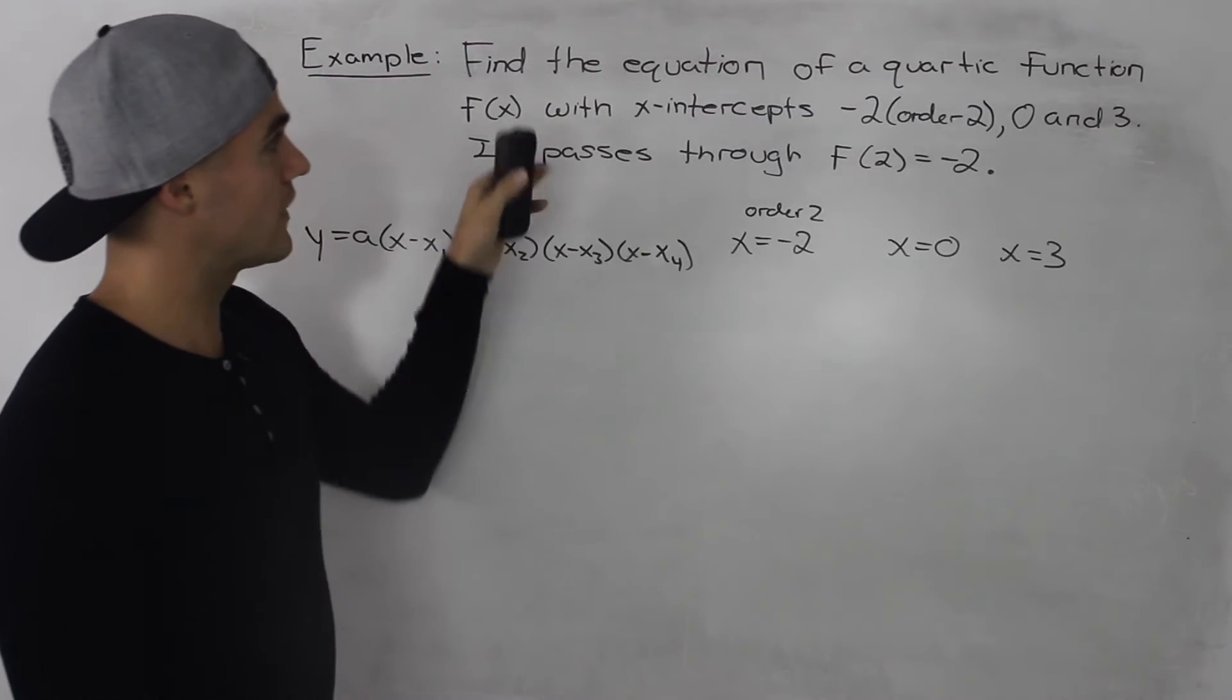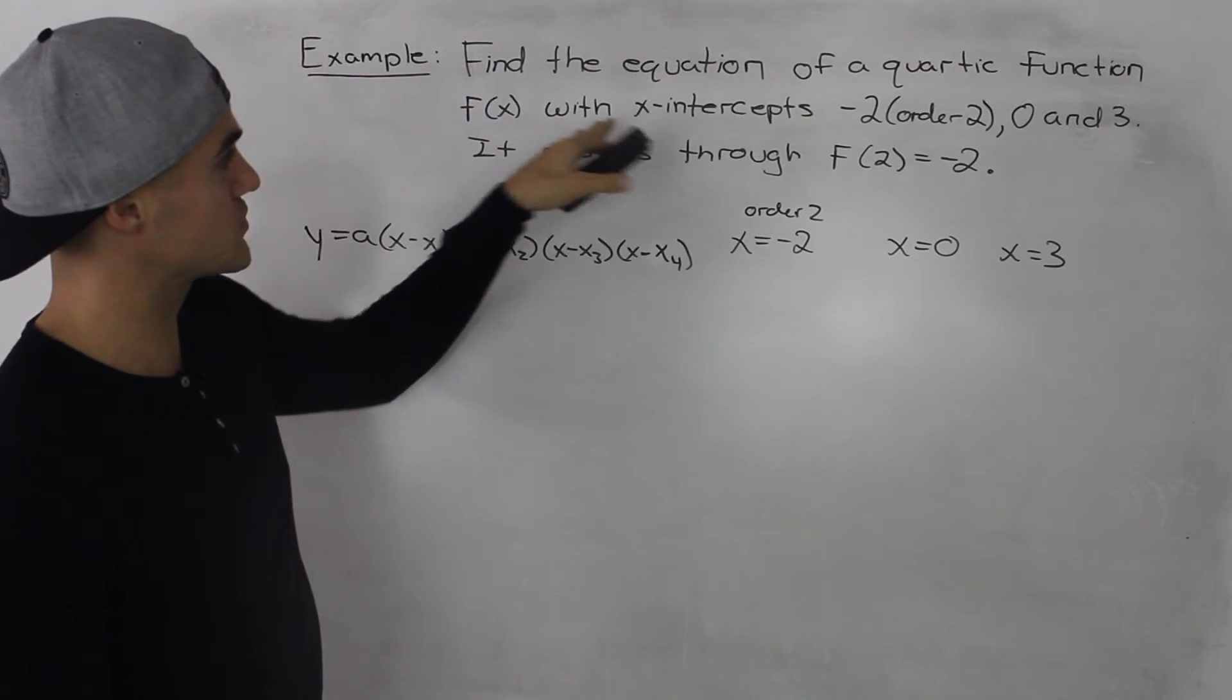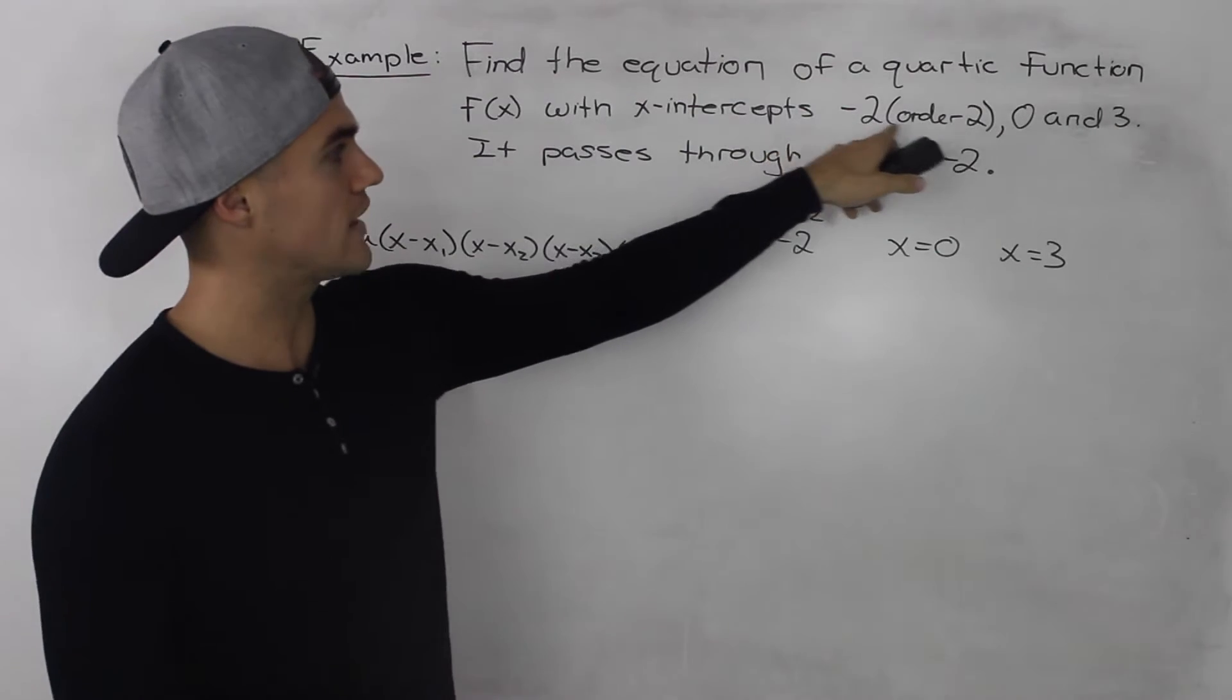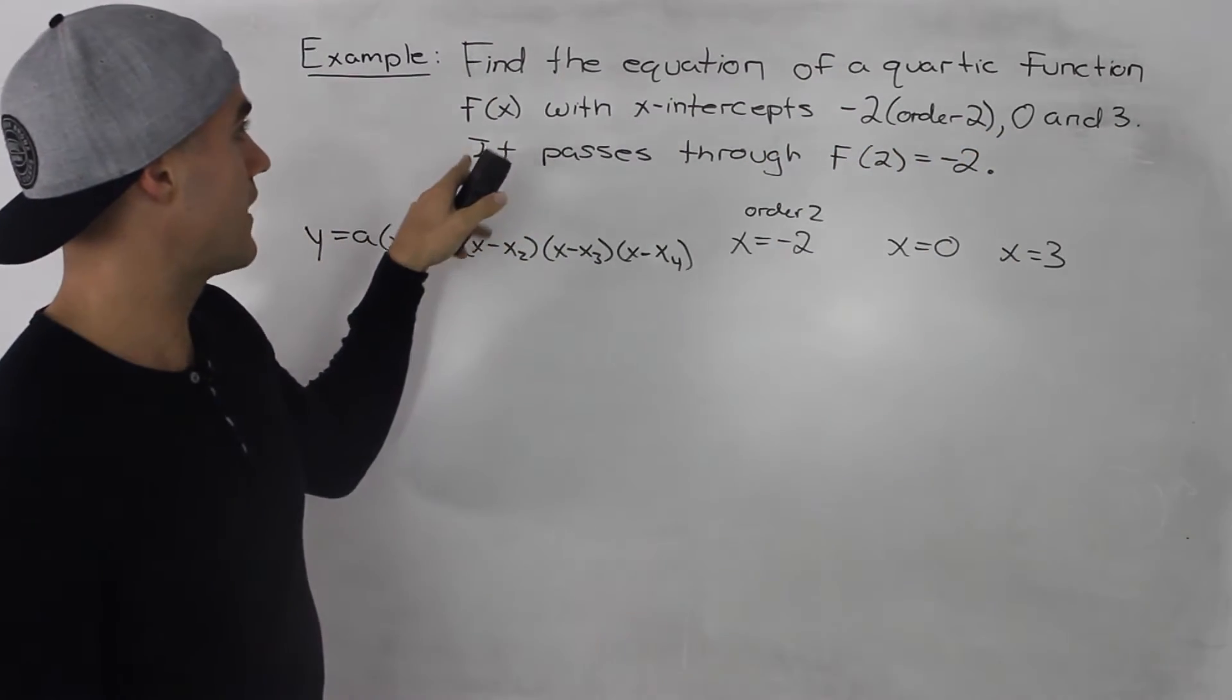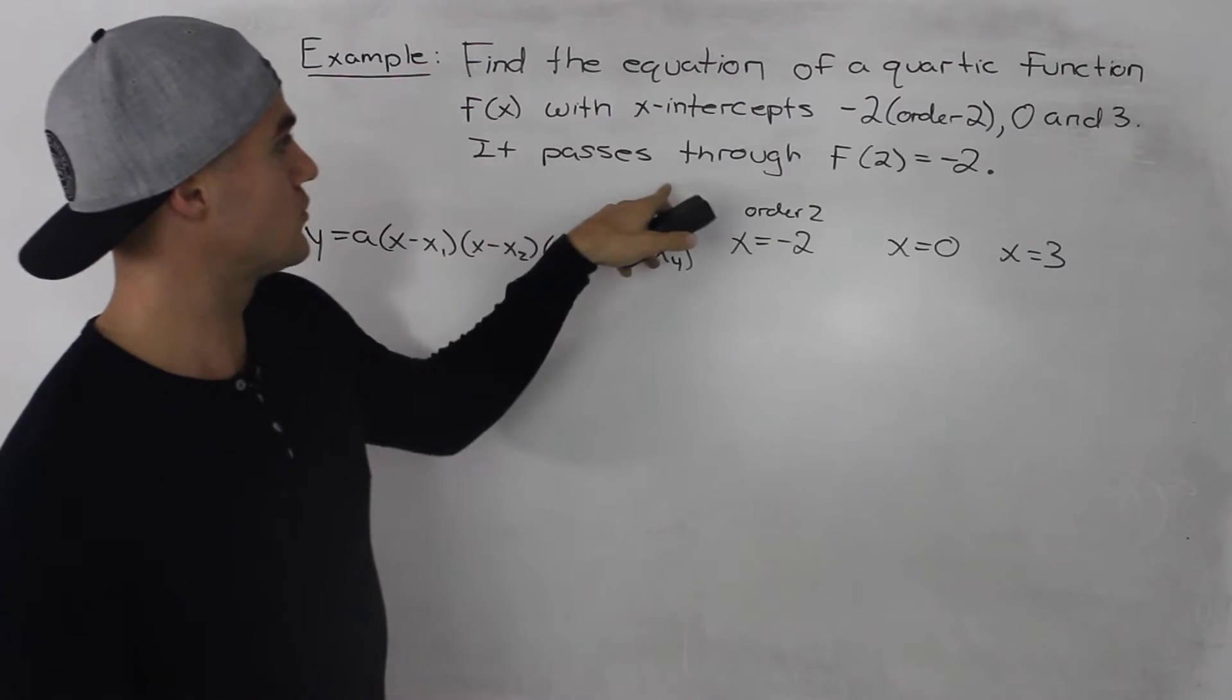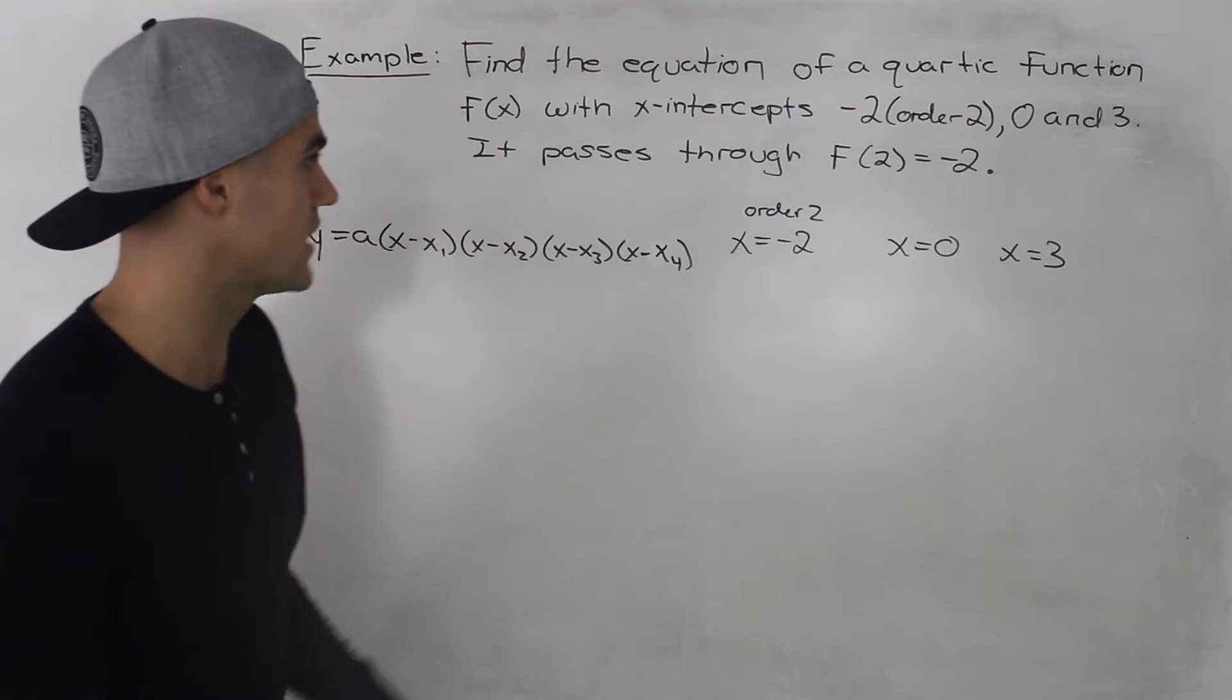Alright, moving on to the next example. Find the equation of a quartic function f(x) with x-intercepts -2 that have an order of 2, 0 and 3, and then this quartic function will pass through the point f(2) = -2.